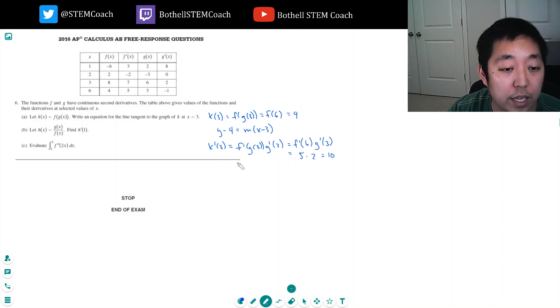Equals 10, so the slope is 10. My equation is y minus 4 equals 10 times x minus 3, or y equals 10x minus 3 plus 4.